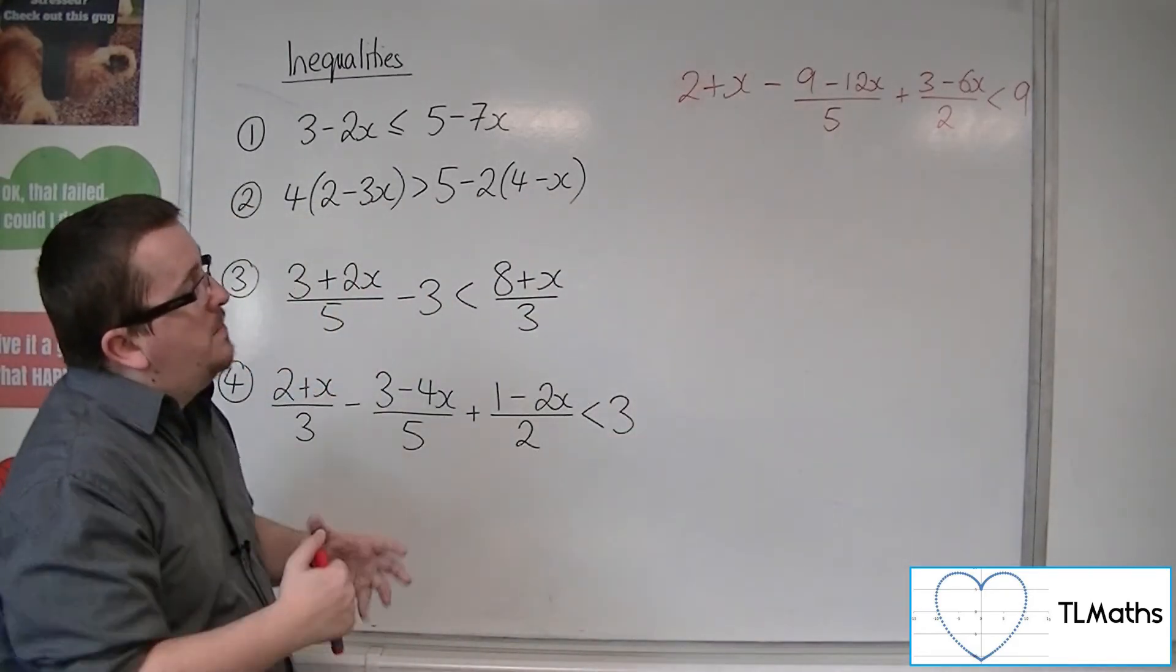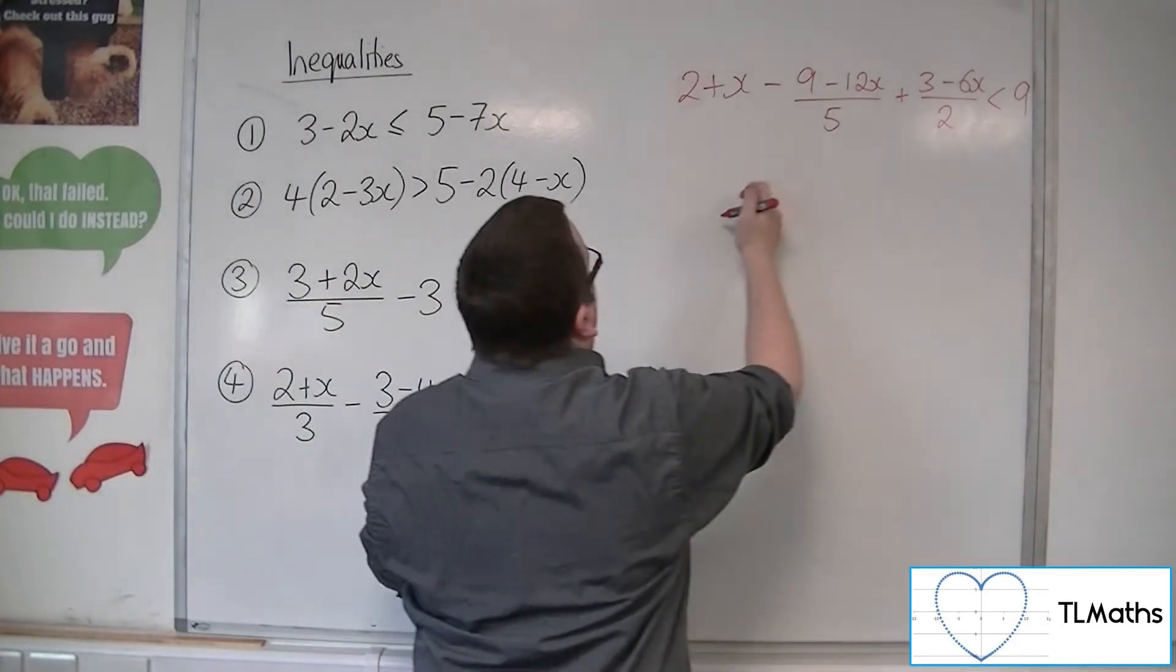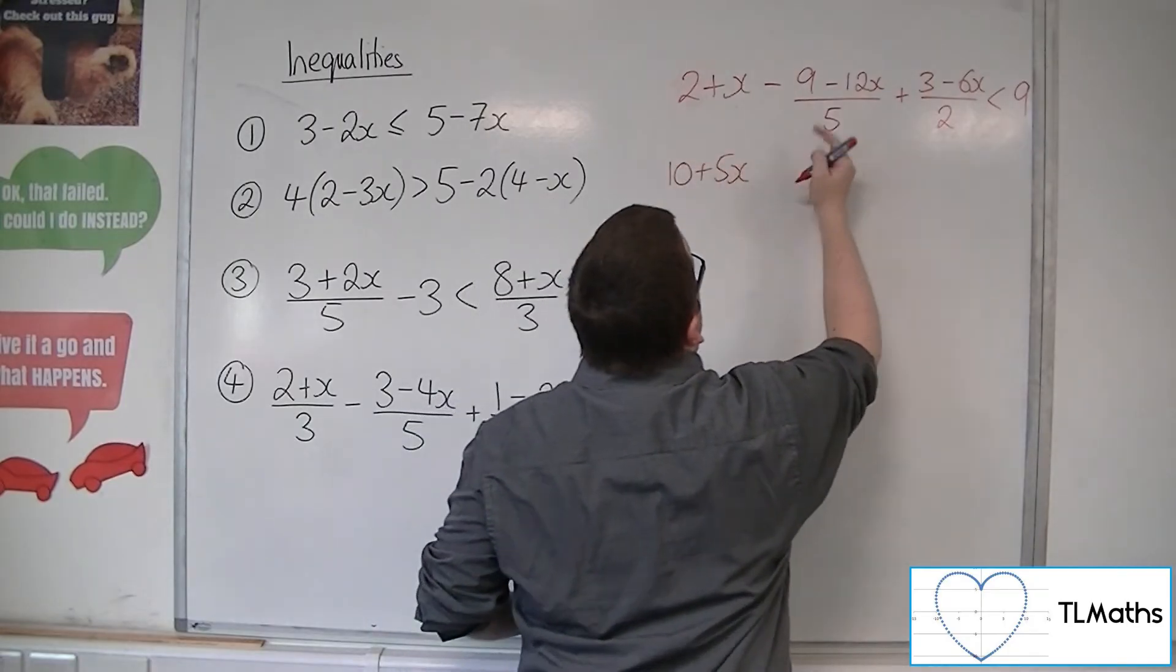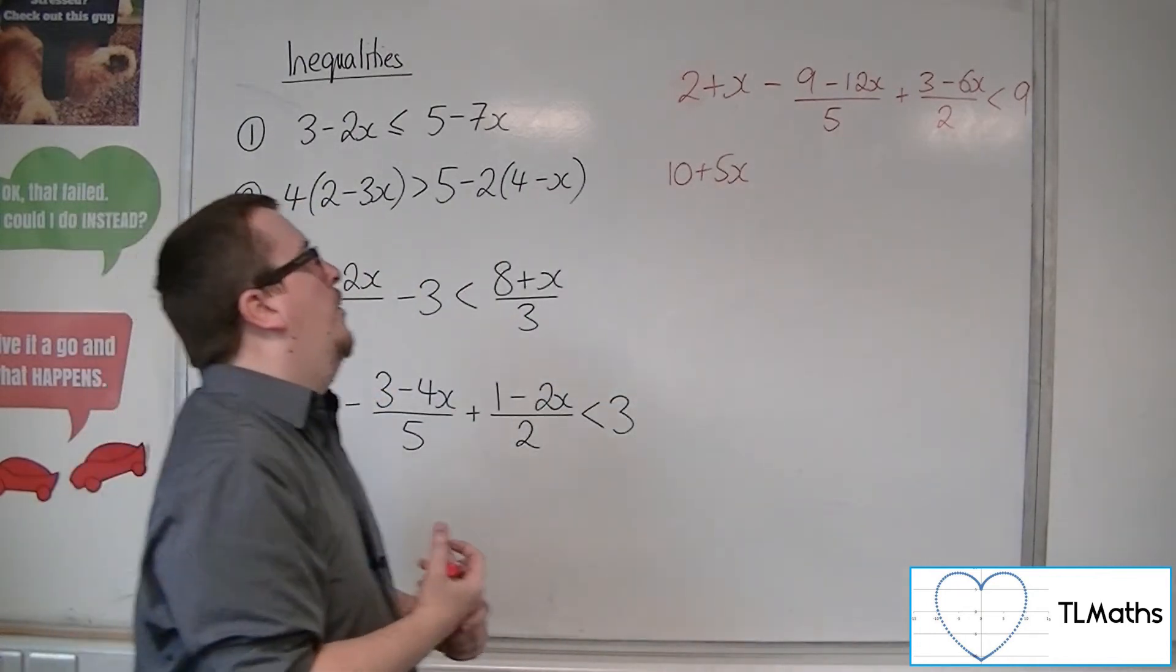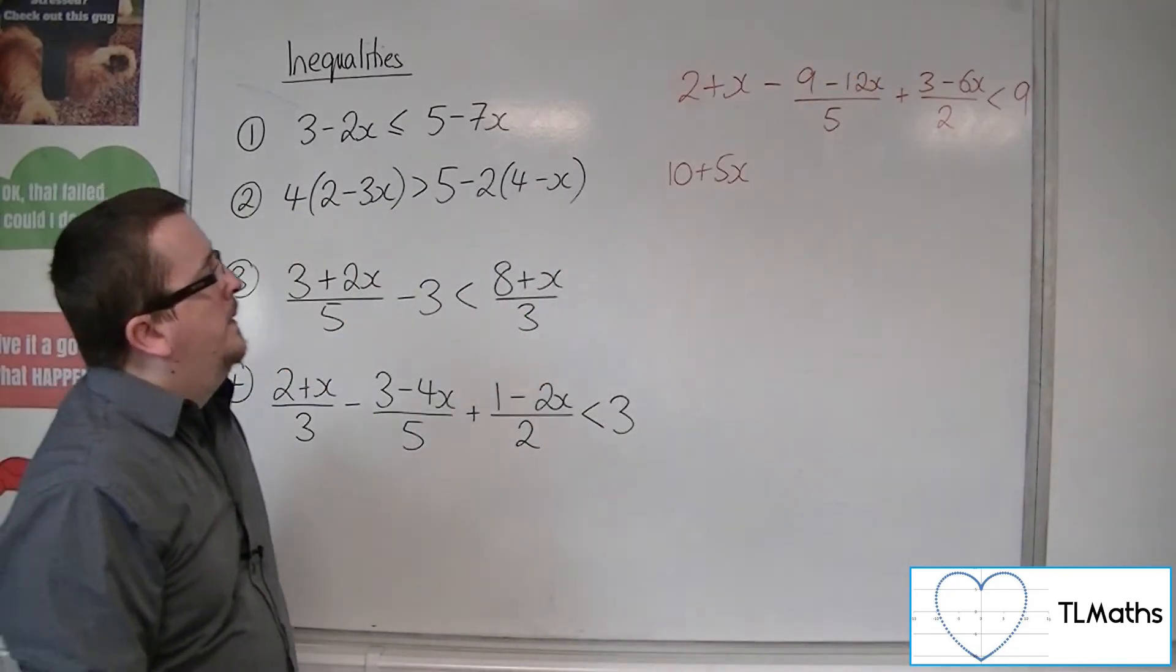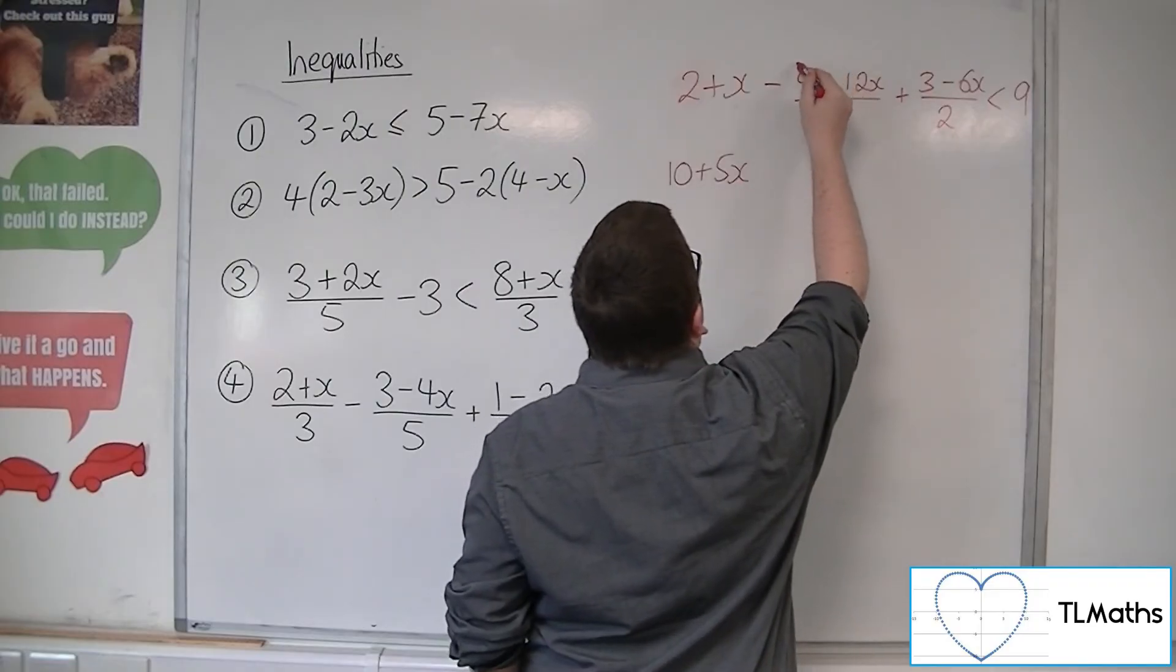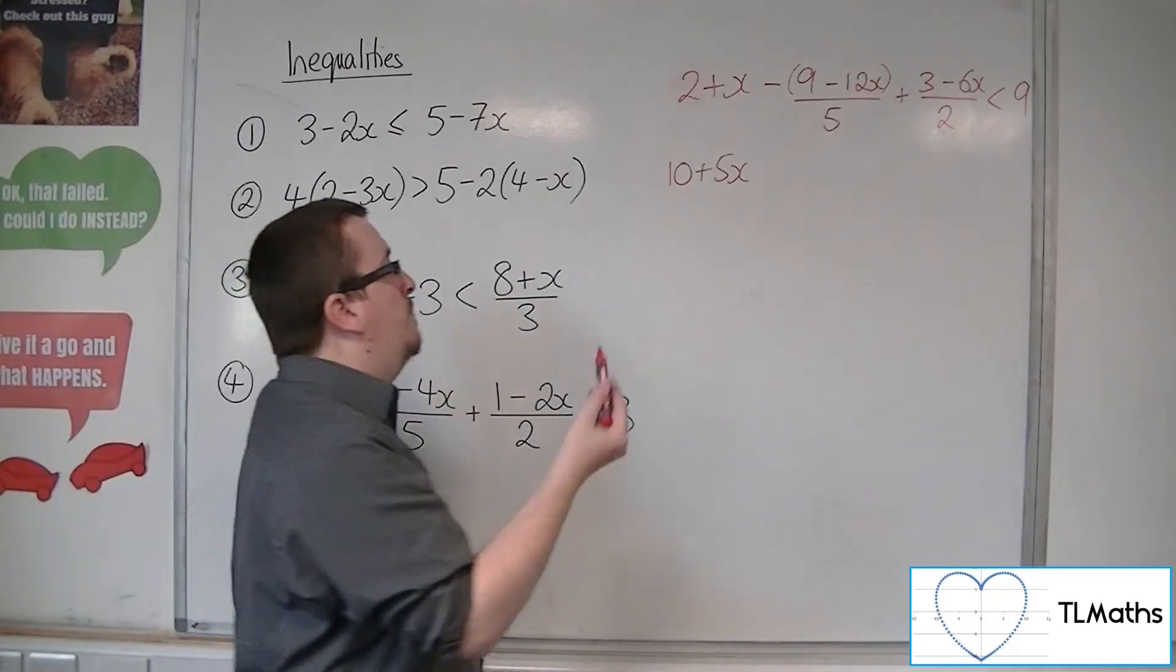I would next multiply everything through by 5 to get rid of this fraction. So I'm going to have 10 plus 5x. Now, this I've got to be careful with, because of this minus being outside the fraction, and that minus being inside. So I've still got minus 9, so it's effectively like having a bracket around it. I've still got this minus 9, but I've got take away minus 12x. So plus 12x.